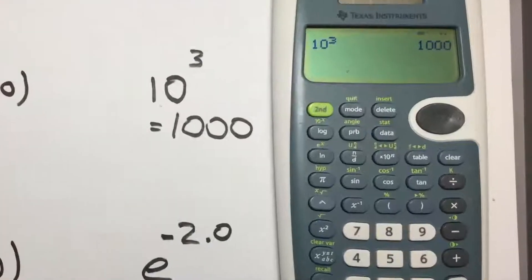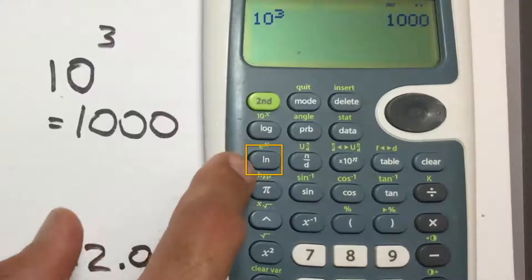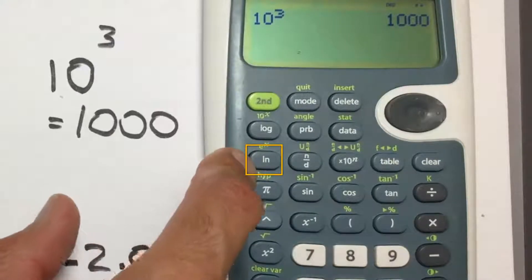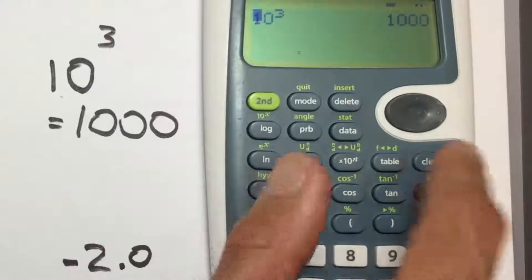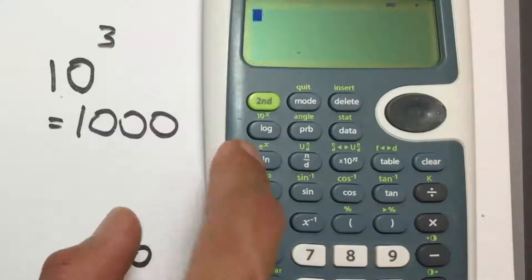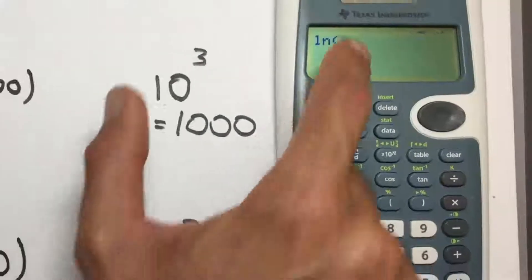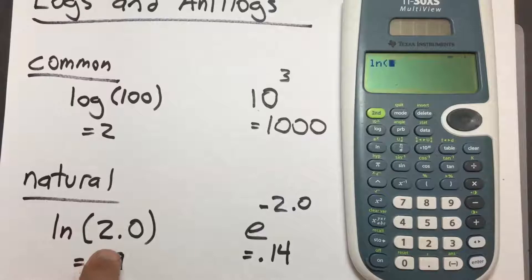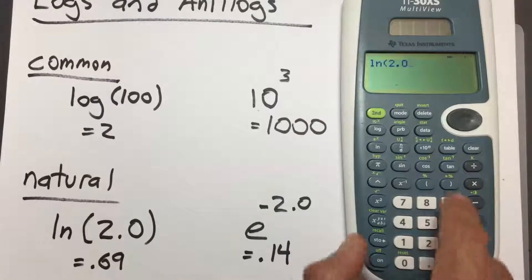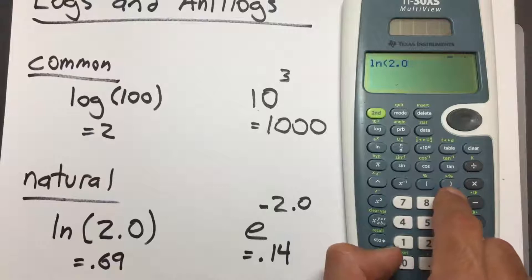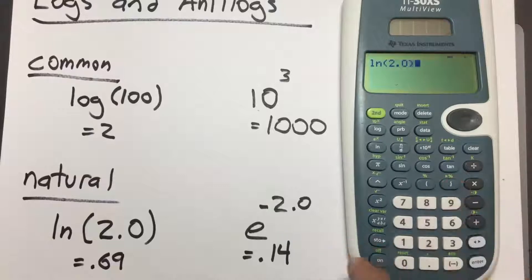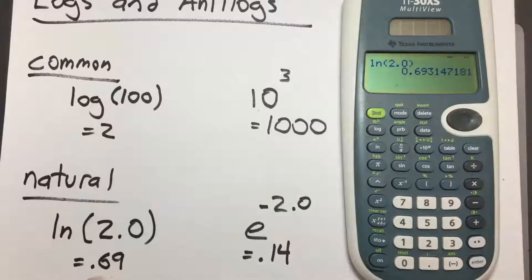To take the natural log, we look for LN on the calculator — that's right below the LOG button. Clear the screen and press the LN key. The open parentheses is placed for us, so we enter 2.0, close the parentheses, and press enter. We get 0.693, which I've rounded to 0.69.